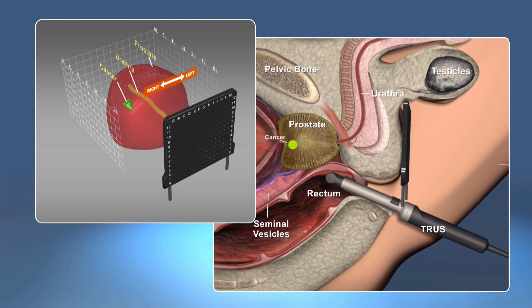During the procedure, a special grid is placed over the patient's perineum and used as a guide to collect tissue samples.